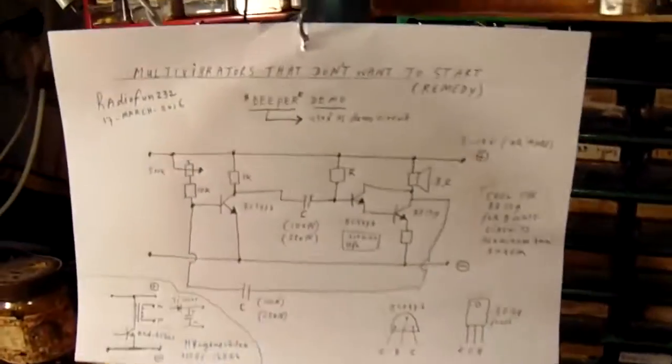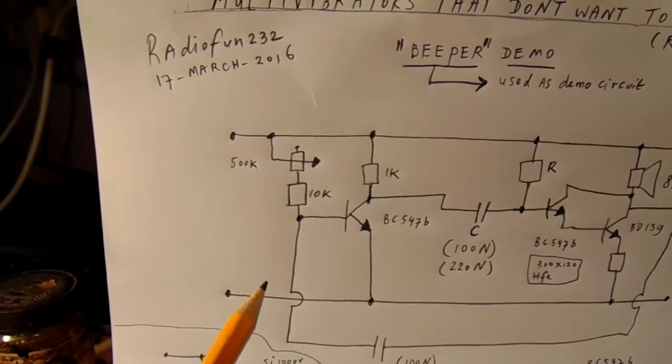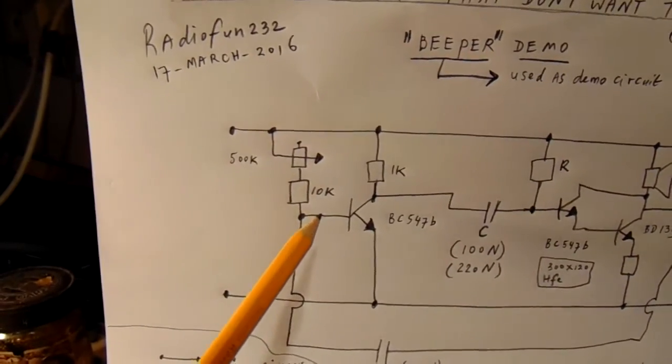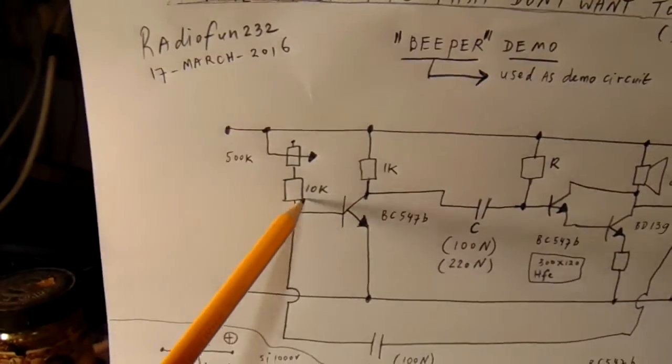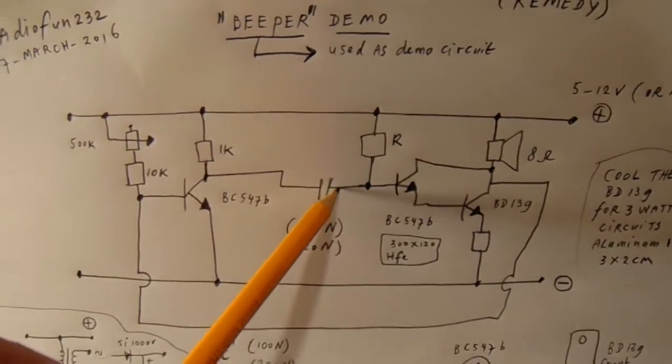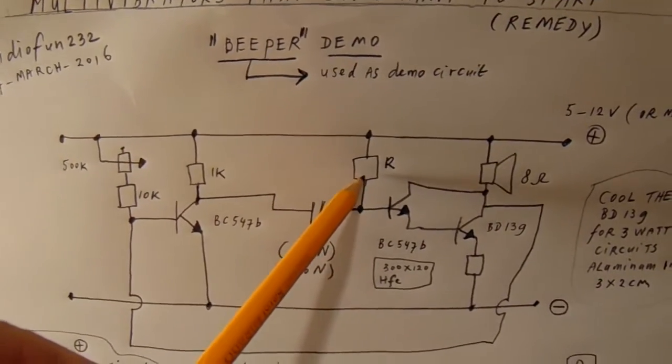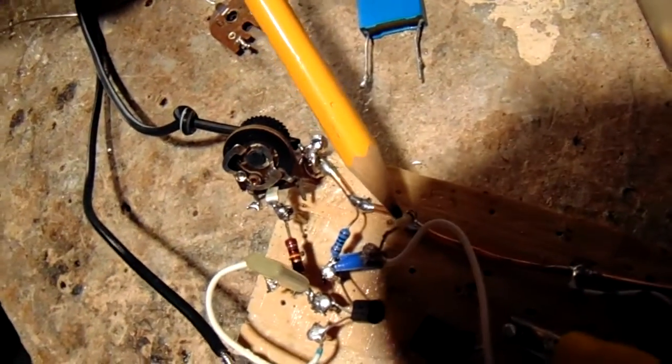The remedy is very simple, and that is to raise the value from this resistor here and also from this resistor here. In this case this resistor is 100k. That's here, this one.